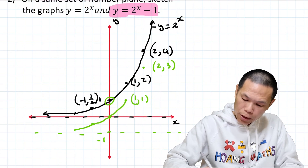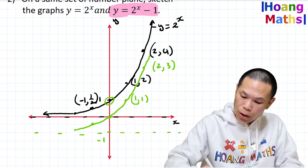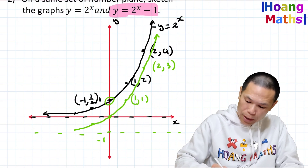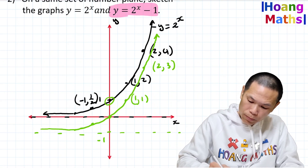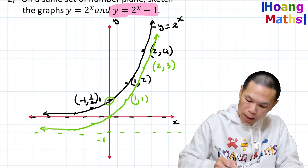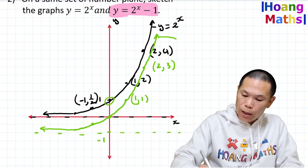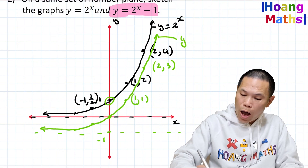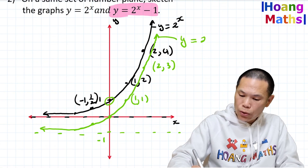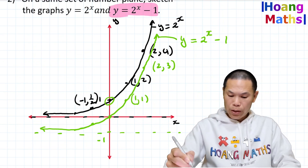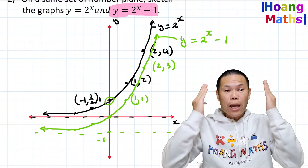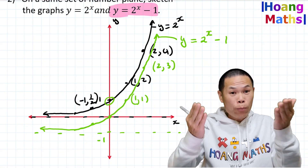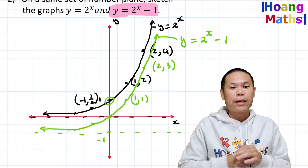Join the dots, extend the line, and the asymptote is here. This graph is y = 2^x - 1. Thank you so much for watching — I hope you got it correct. Bye!